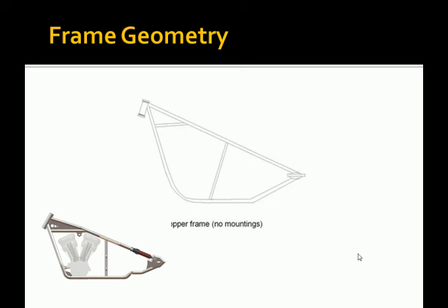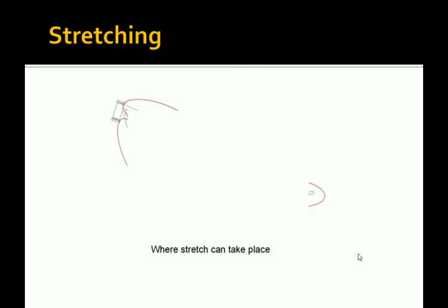Stretching takes place in three main areas: in the rear by extending the wishbones and bottom rails, by extending them up by the neck, and by extending the top tube and the down tubes to shift the angle of the neck. Here this diagram shows where I mean.